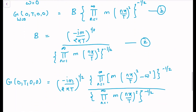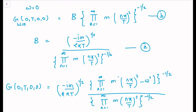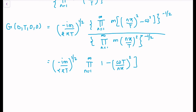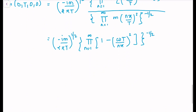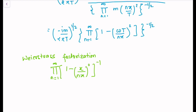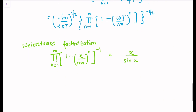With m factored out, we can simplify the product part and write it as the product over n of one minus omega T over n pi, all squared, to the power minus one-half. We now use the known product formula: the product over n from 1 to infinity of one minus x over n pi, squared, to the power minus one equals x over sin(x).